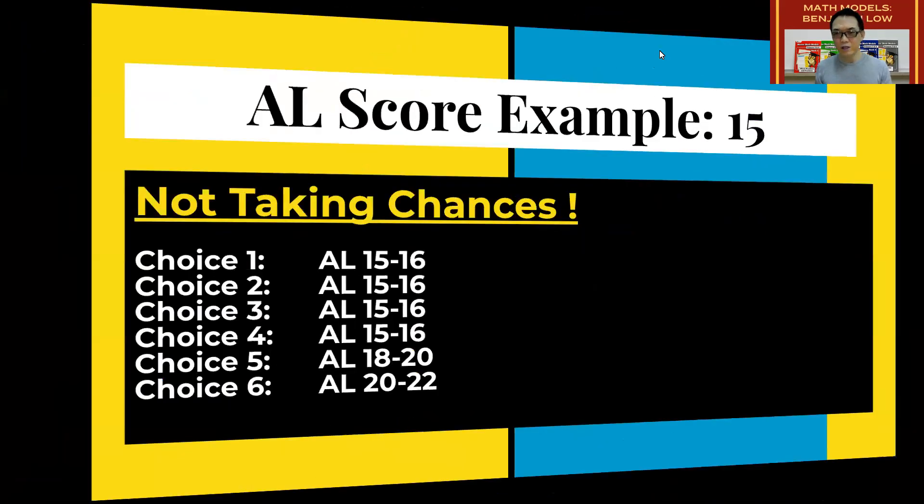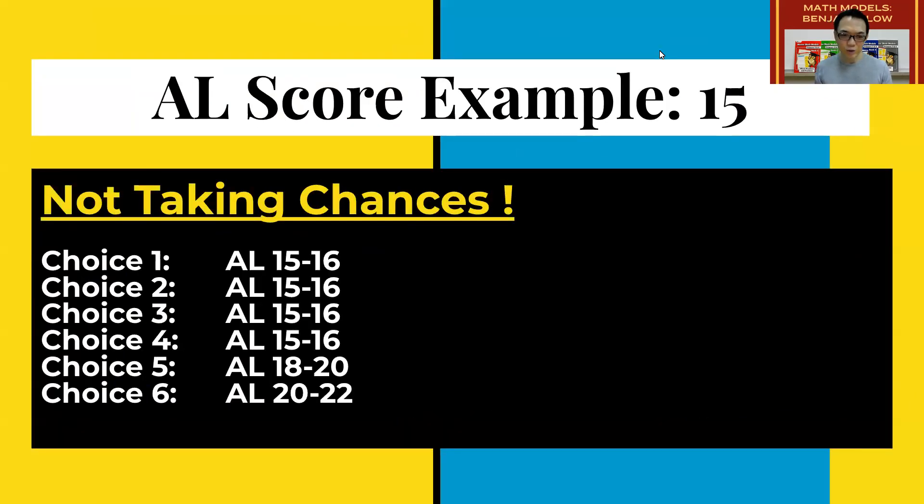And then if you don't want to take any chances, then you should be doing this. Choice one, two, three, four are all based on your AL score. And then five and six is to ensure that you get a school that you want.